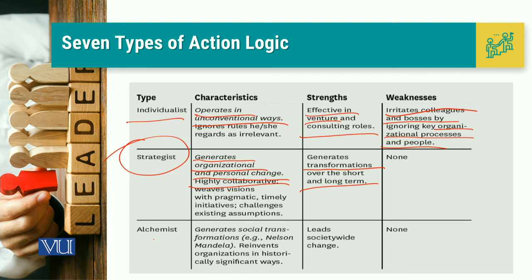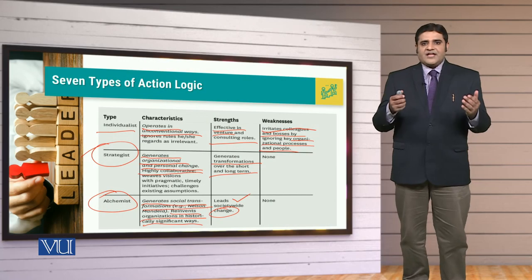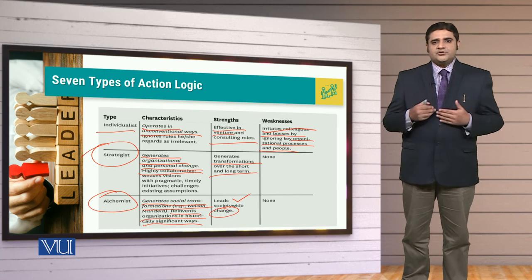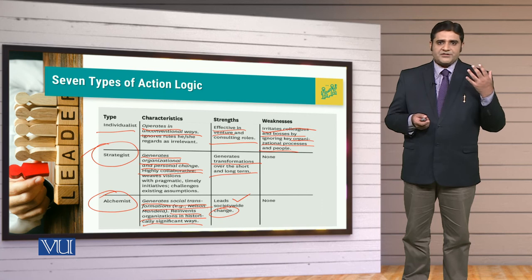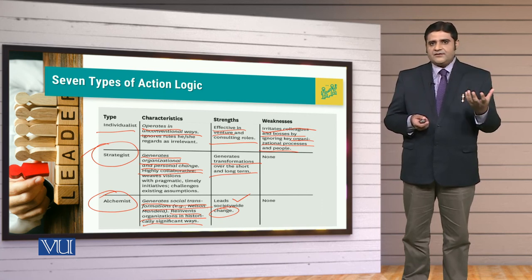The best possible leadership is the alchemist. The alchemist can generate social transformation — Nelson Mandela is the example. The alchemist can reinvent the organization in historically significant ways and bring change not just linked with the organizational facility but also lead change in major aspects of society from a holistic perspective. The alchemist's transformational capability is at a superlative degree. The alchemist possesses humility, willpower, and is a Level 5 leader.